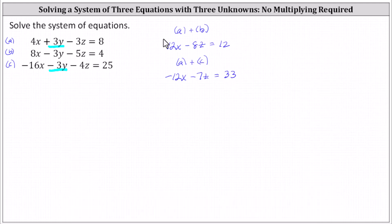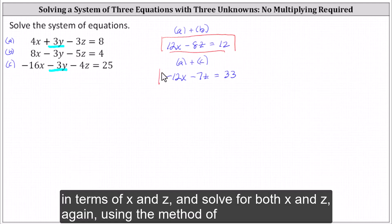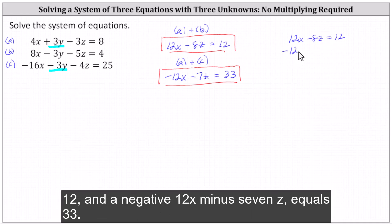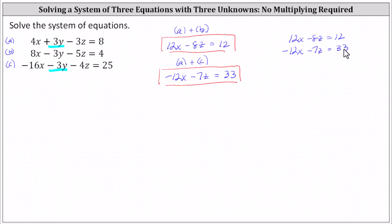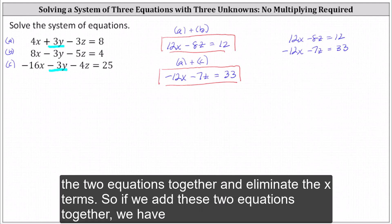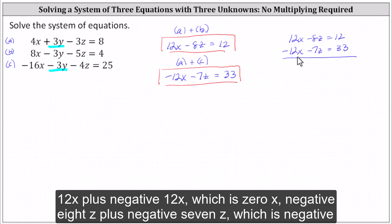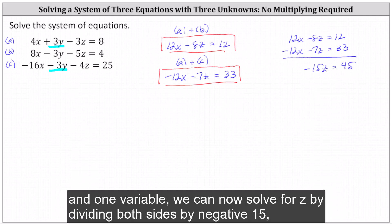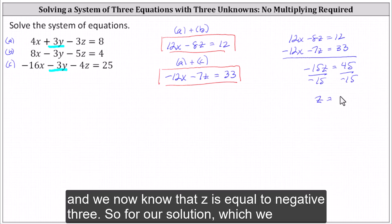Now we take these two equations in terms of x and z and solve for both x and z using the method of elimination. We solve the system 12x minus 8z equals 12 and negative 12x minus 7z equals 33. Notice the x terms are already opposites, so adding the two equations: 12x plus negative 12x is zero, negative 8z plus negative 7z is negative 15z, and 12 plus 33 is 45. Dividing both sides by negative 15, we find z equals negative three.